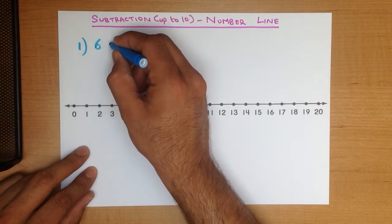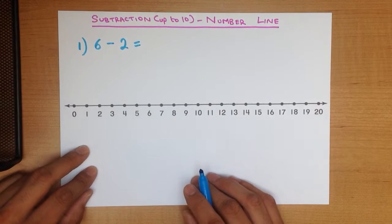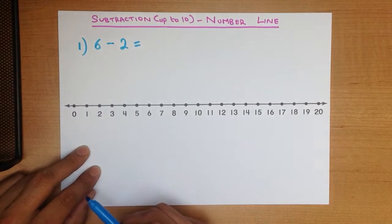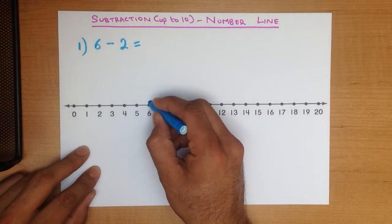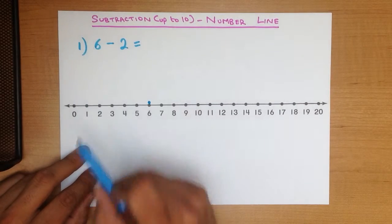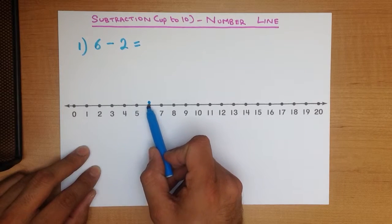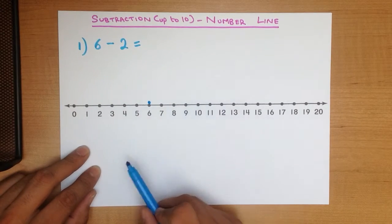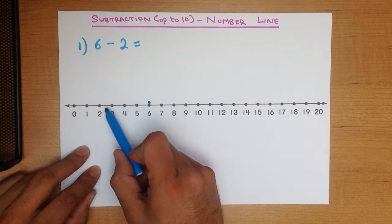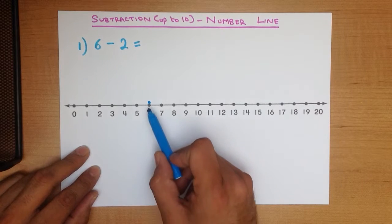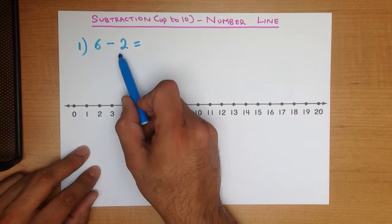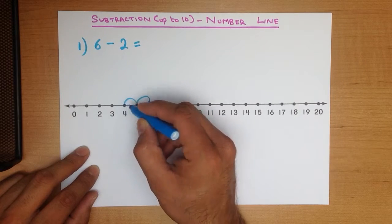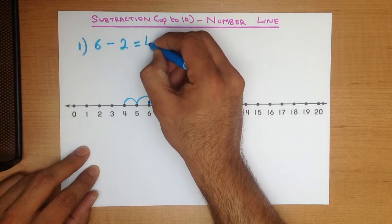Let's begin with a nice easy example: what is 6 minus 2? Using the number line, we take the first number and find it — here it is, it's 6. Let's put a little blue dot here. We are minusing, subtracting. If we are subtracting, we go backwards. If this was a plus sign we would go the other way, but because it's minus we go backwards. 6 minus 2 — how many jumps? It's 2. So we jump back 2 times: 1, 2. What does it land on? 4.